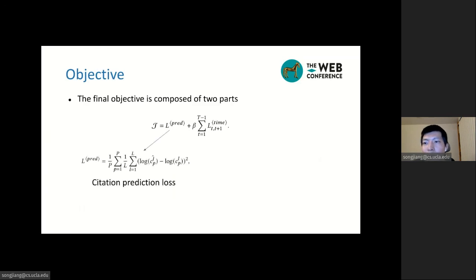To train the model, we design an objective which contains two parts. The first one is the citation prediction loss function, which intends to minimize the citation prediction error. Please note that this citation count is in log scale. And the temporal alignment regularizer, which makes the embedding more reasonable. As we said that the embedding of a same entity in close years, they should be similar. And we also use a parameter beta to control the strength of the alignment regularizer.